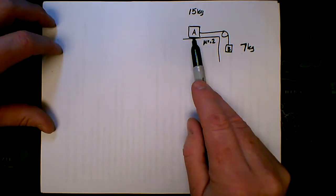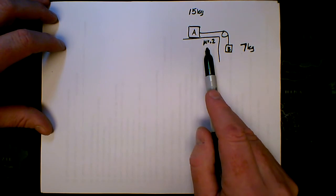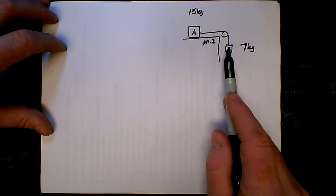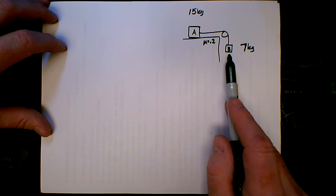We can see here on the table is block A, mass of 15 kilograms. There's a coefficient of friction of 0.2 between the block and the table. A string attached to a pulley hanging off the edge is block B, with a mass of 7 kilograms.